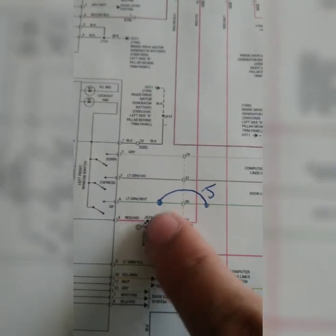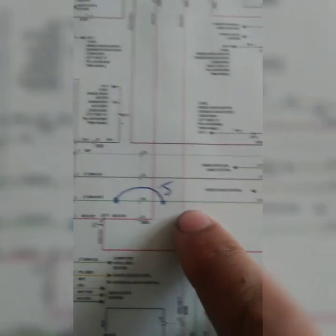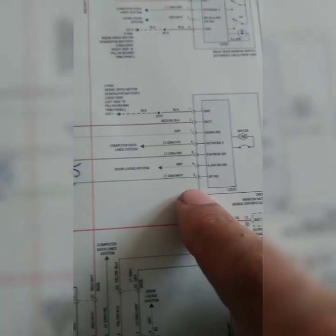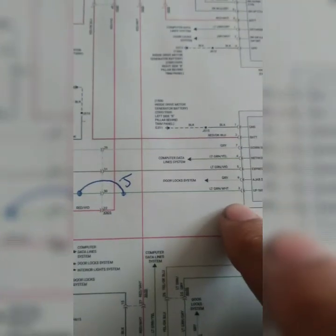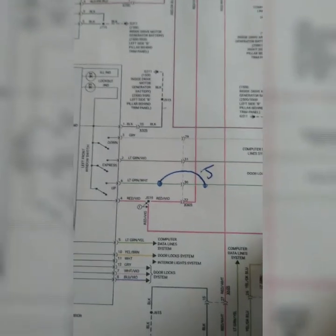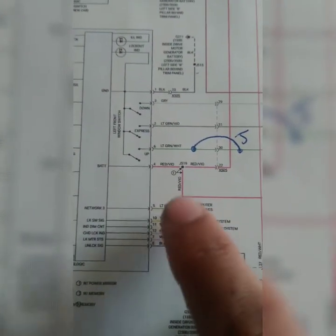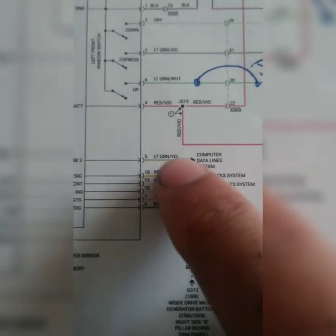You can see here that this guy says this goes to the driver window motor. Wait a second, never mind. The grip, the brake was right here, not here. I gotta fix that. But you get my point, so this is the data line that was broken. I did a jumper to it.